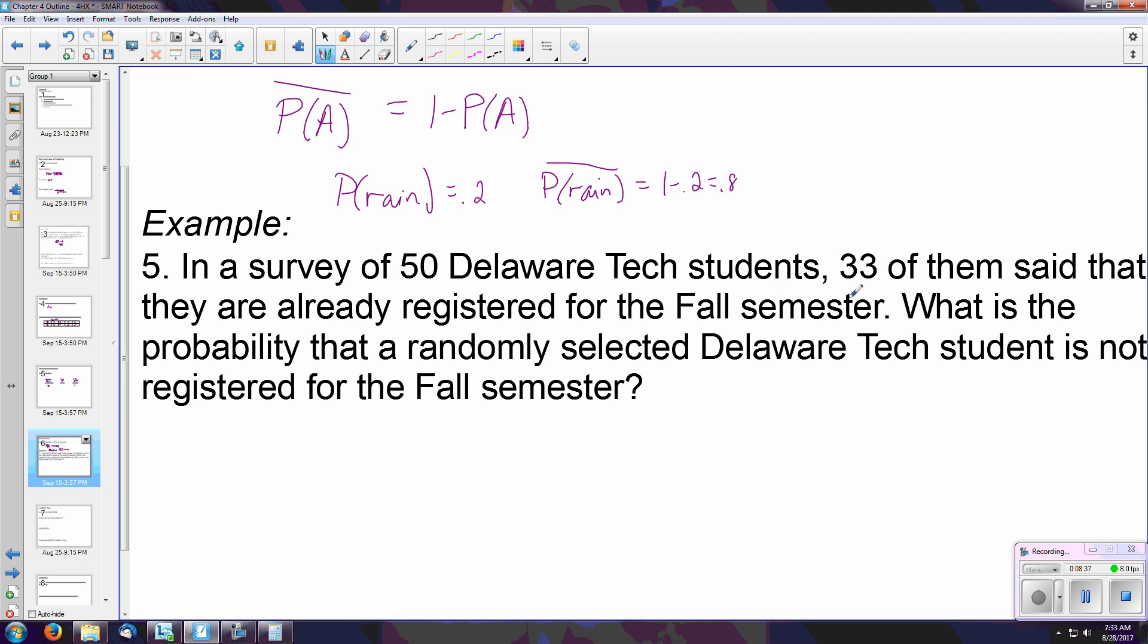There's a survey of 50 Delaware Tech students. 33 of them said that they are already registered for the fall semester. What's the probability that a randomly selected Delaware Tech student is not registered? So they told us how many are registered. How do we find out how many have not? There's two different approaches to this, but let's go with the most straightforward here.